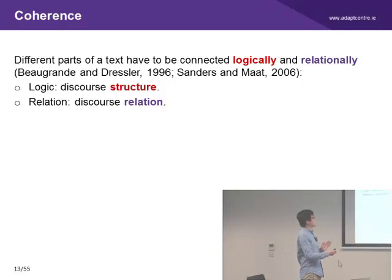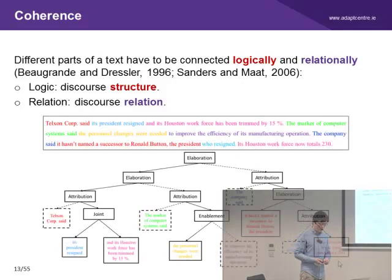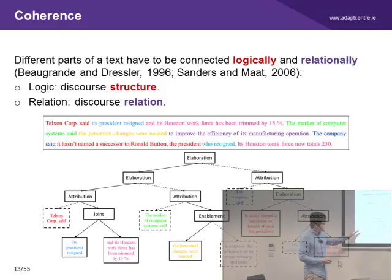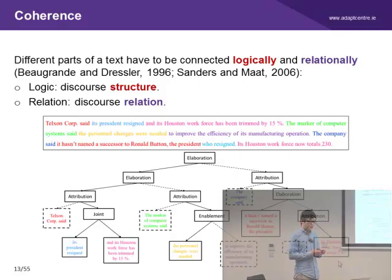Coherence makes different parts of a text connected logically or relationally, mainly focusing on the structure of the whole text and the relation between segments. According to rhetorical structure theory, a text can be parsed into a tree, where all leaves are segments of the text and all nodes are relations between different segments. When translating a text, a translator would not only translate the words but also try to transfer the relations or logic from the source side to the target side.